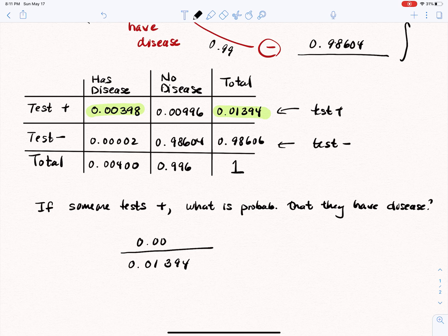the 0.00398. And if we were to compute that, we would get 0.2855, which is 28.55%. So that's not a very accurate result because that means that if you test positive, that means you have less than a 30% chance of actually having the disease.